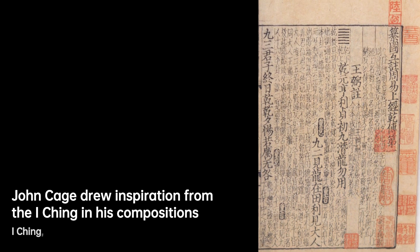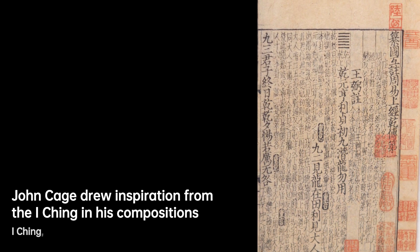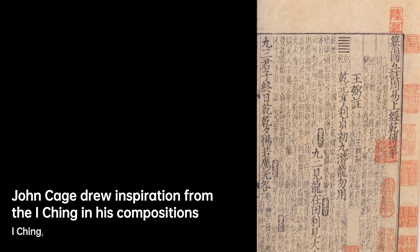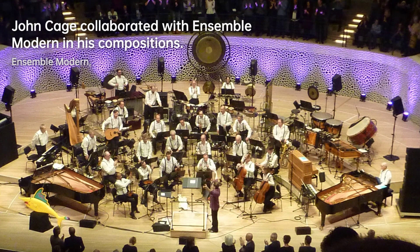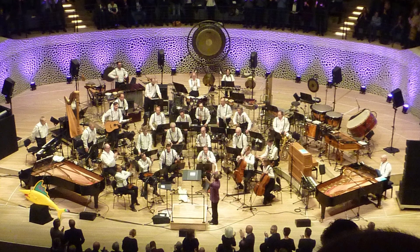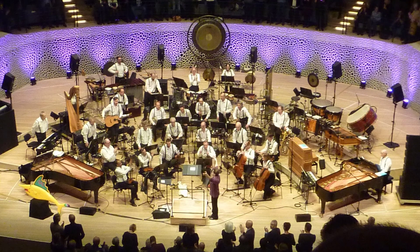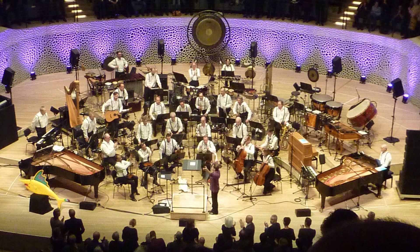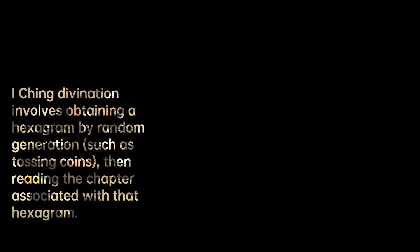One of Cage's most famous and controversial compositions is 4'33", created in 1952. This piece is performed in complete silence, with the musicians doing nothing but being present on stage for the specified duration. The intention is for the audience to experience the sounds of the environment during the performance, challenging traditional notions of musicianship and the definition of music itself.